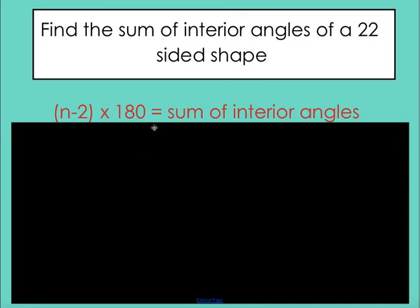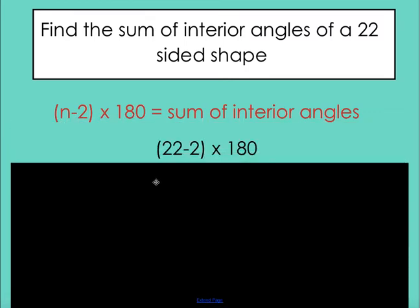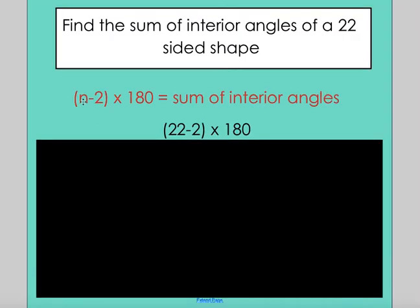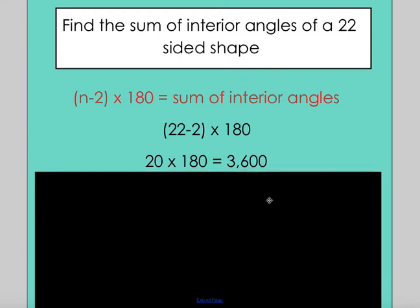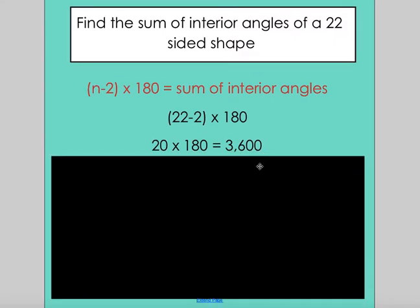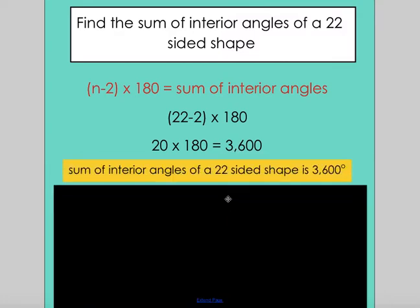Then you want to substitute n for the number of sides. So here we know the number of sides is 22, so I just replace n with 22 to give me this line. I then start to make the calculation: 22 minus 2 gives me 20, so I multiply that by 180, and here I have my total, 3600. So my final answer is that the sum of interior angles of a 22-sided shape is 3600 degrees.